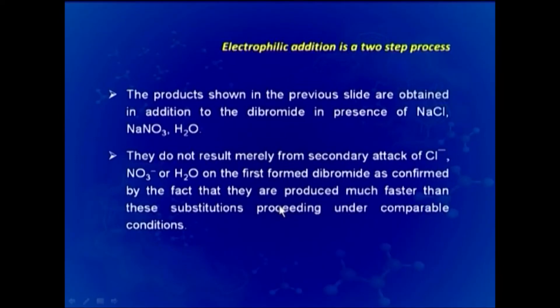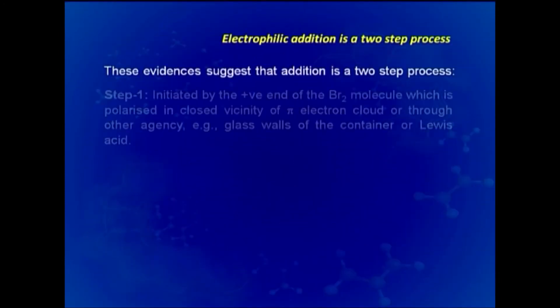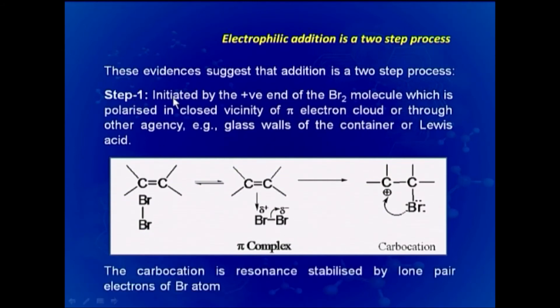These mixed products do not result merely from secondary attack of Cl minus, NO3 minus, or H2O on the first-formed dibromide, which has been confirmed by the fact that they are produced much faster than analogous substitution reactions under comparable conditions. These evidences suggest that addition is a two-step process, initiated in step 1 by the positive end of the bromine molecule — Br+ — polarized in close vicinity of the electron cloud or through other agencies such as glass walls or Lewis acids.